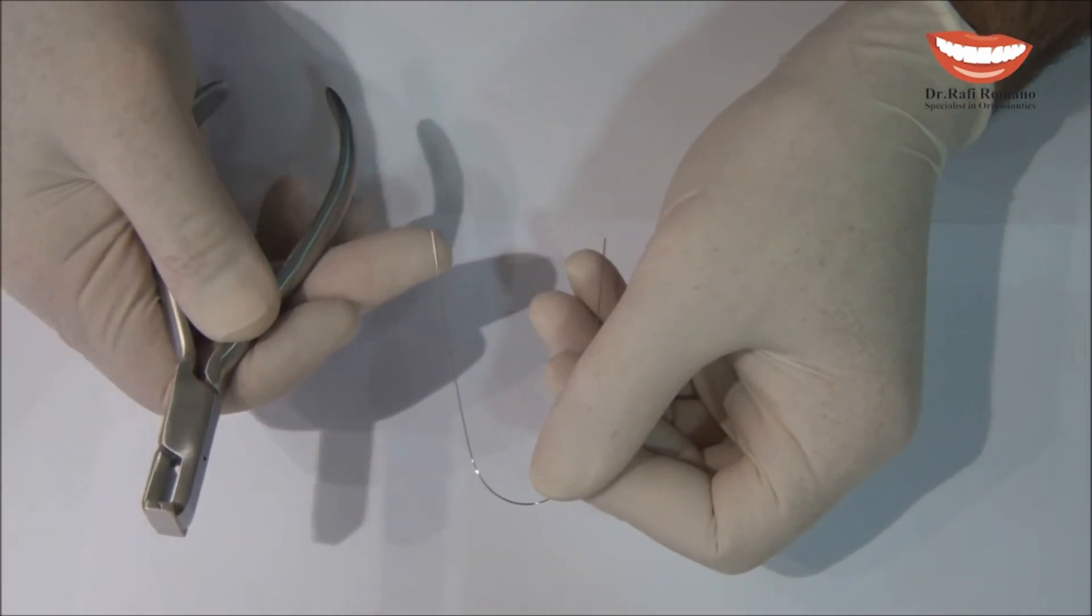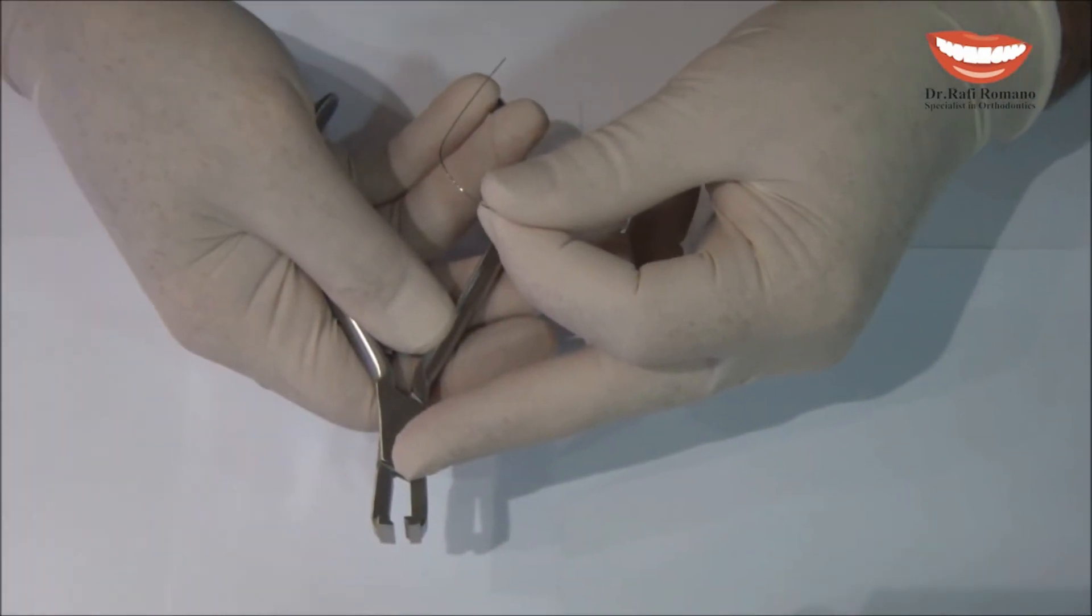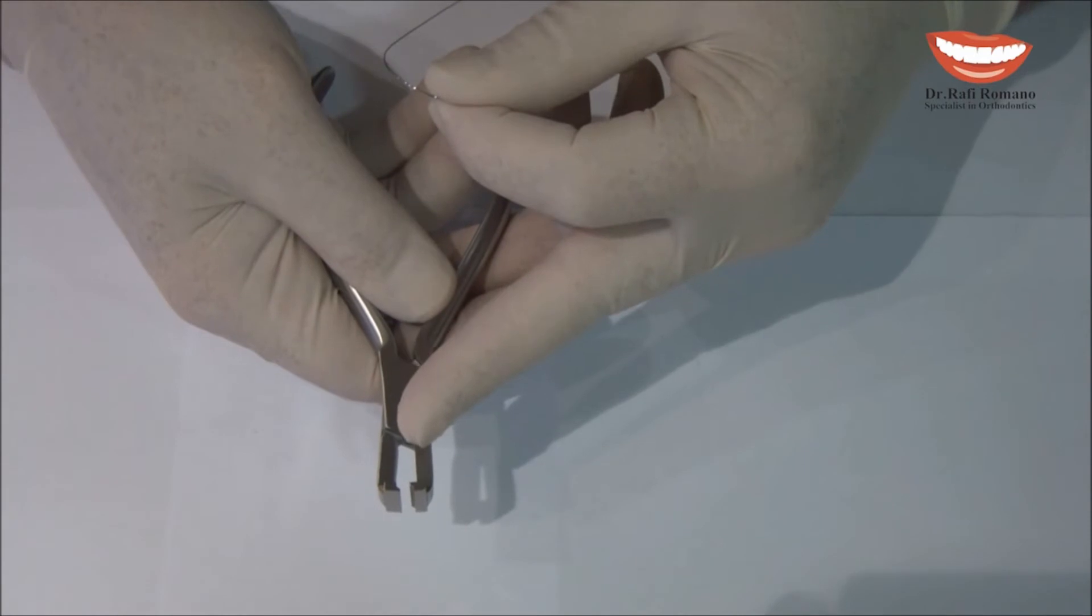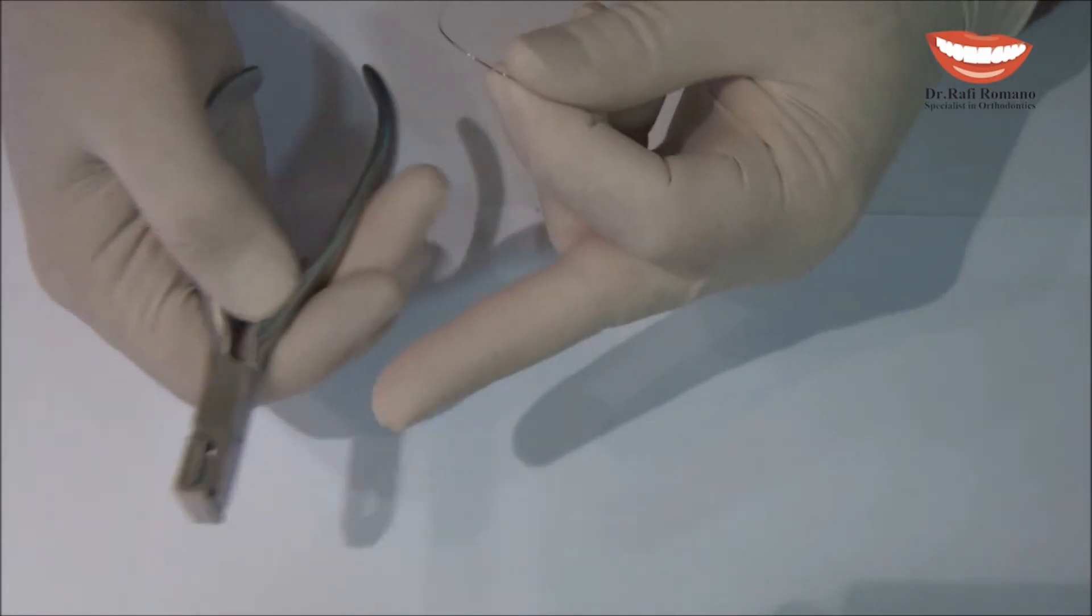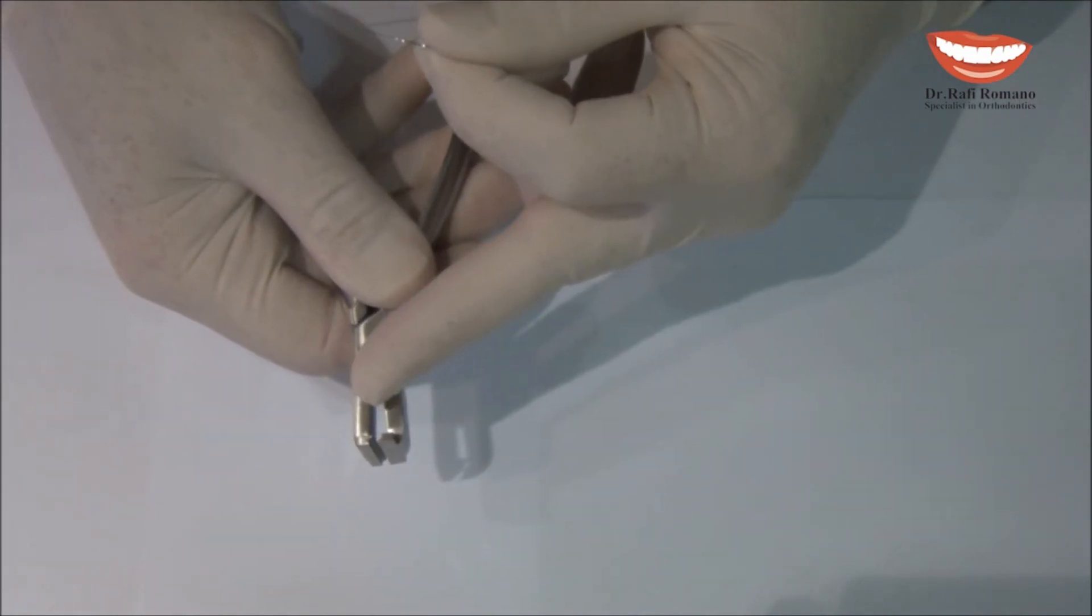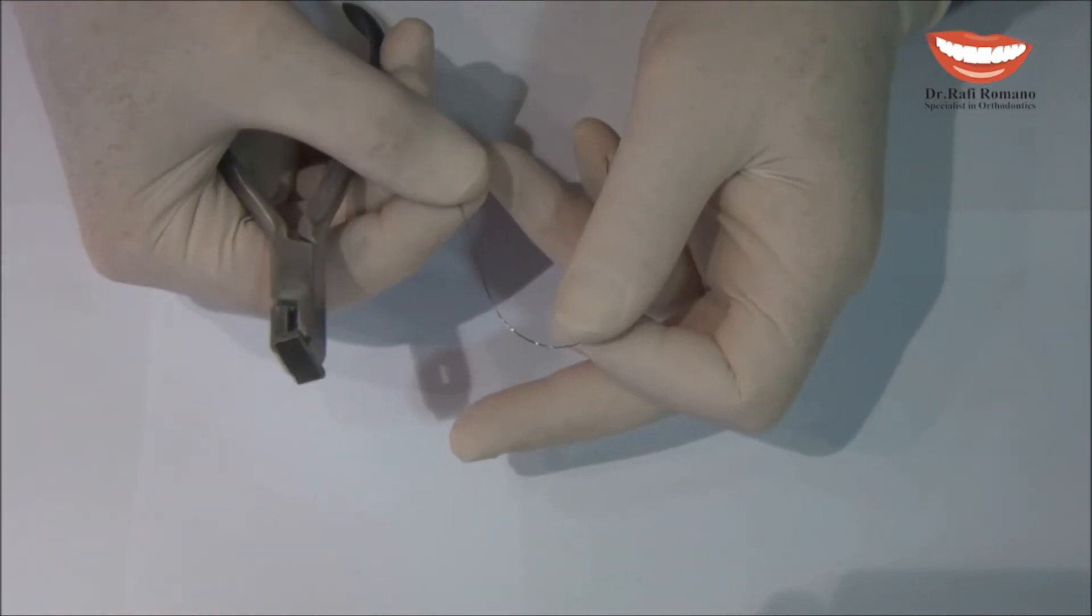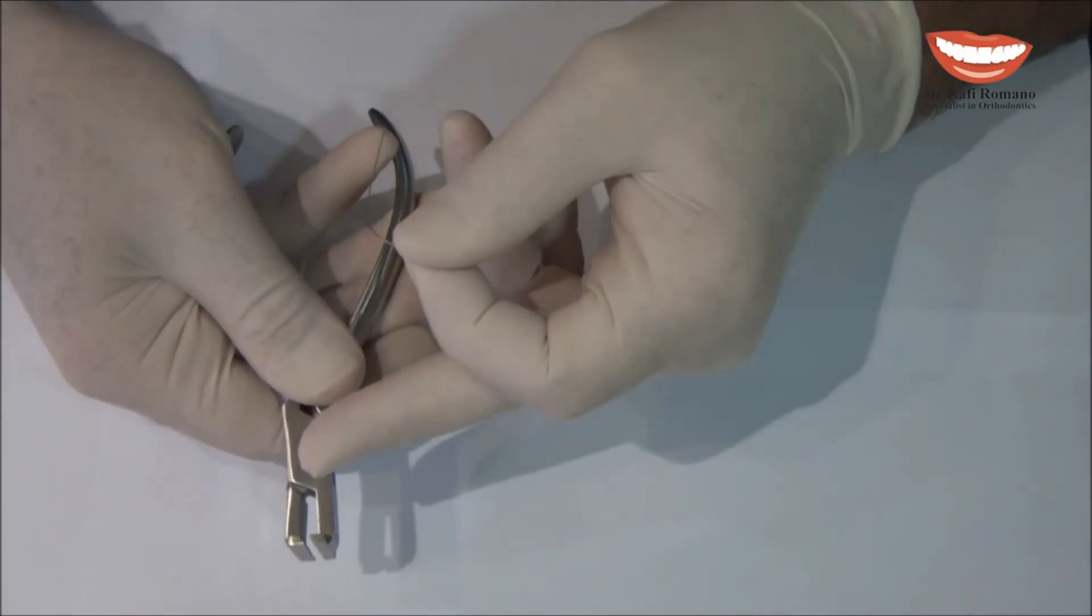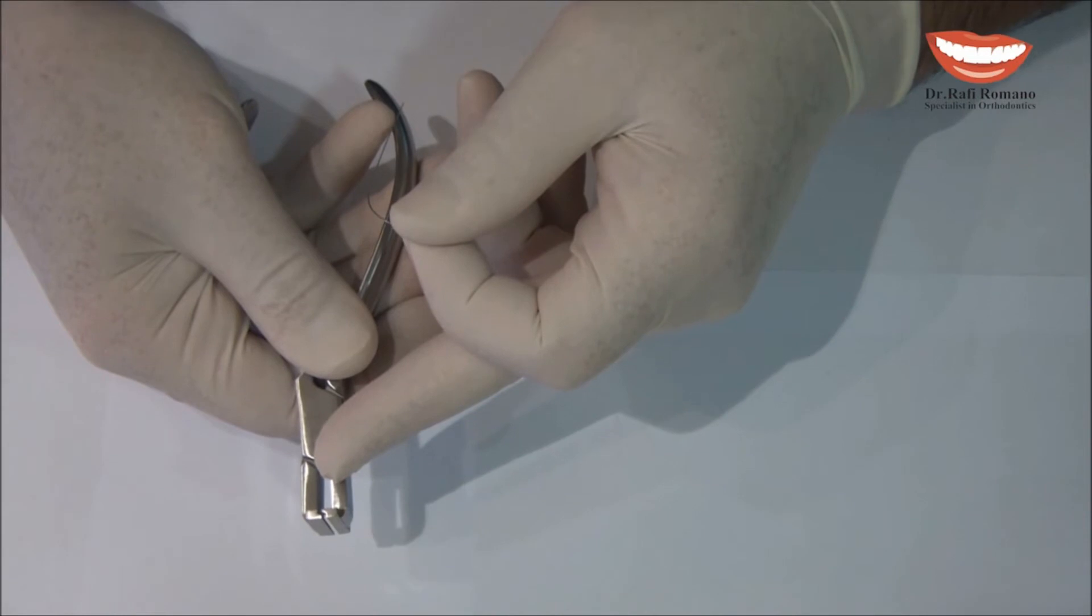One is to take the plier called the offset plier, which has one side to do the in-bend and the other side to do the out-bend. It comes in a few versions, depending on the size of the step, from a quarter of a millimeter to one millimeter.